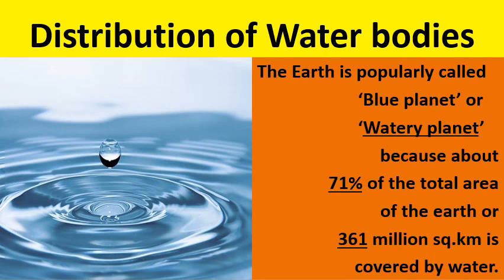Let us know about the distribution of water bodies. This earth is called the blue planet or watery planet. It is mainly because 71% of the total area of the earth is covered by water — that means 361 million square kilometers. Because it looks blue from space, it is also called the blue planet.